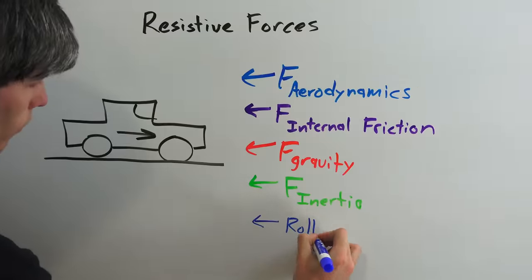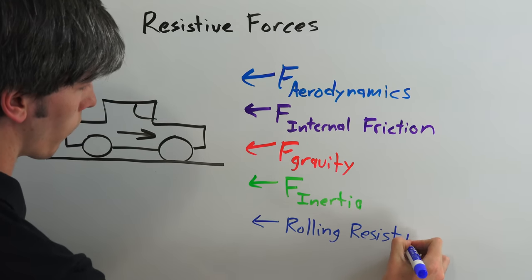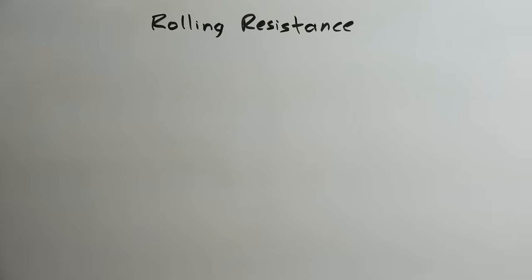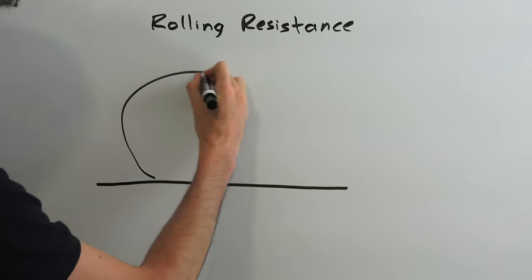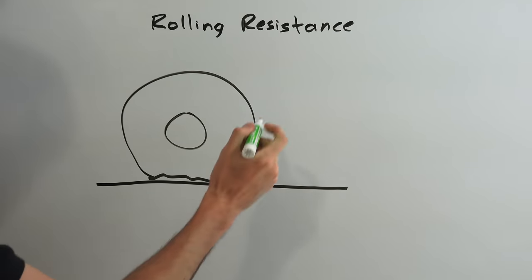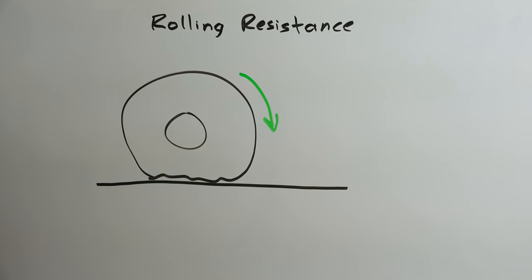Rolling resistance is the energy consumed by a tire as it travels over a specific distance. Energy is lost as heat when the tire deforms on the road, creating the contact patch, and then returns to its original state as the tire continues to rotate. How much energy is lost is a result of the tire's hysteresis.